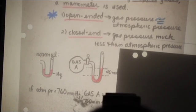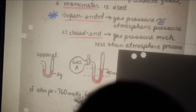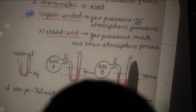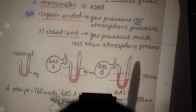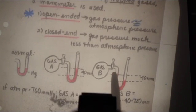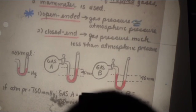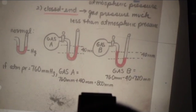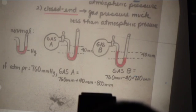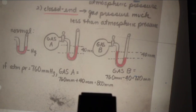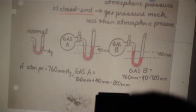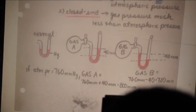So how much pressure would this gas be exerting? The atmosphere is 760. We're adding this difference in columns, which is 40. This time when you open the chamber, the mercury is pushed toward the gas. That means the atmosphere has more pressure than the gas. The gas has less. So now we would take 760 millimeters, which is our atmosphere, subtract the difference in the columns, and this gas is exerting 720 millimeters of pressure.